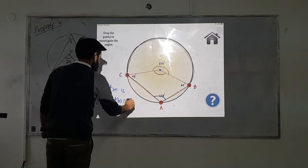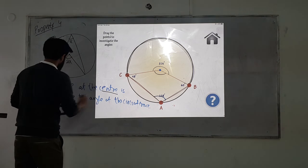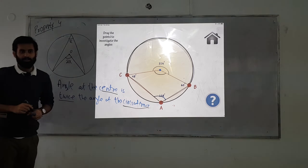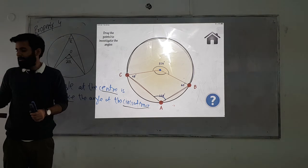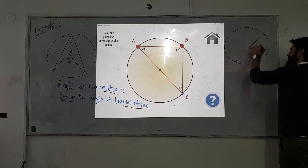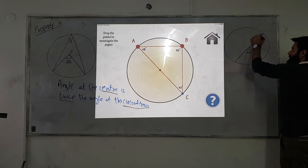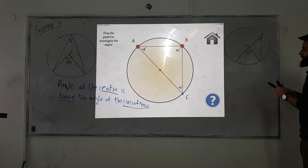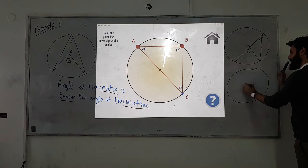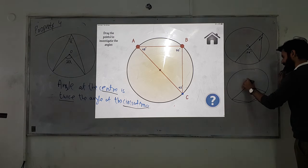If I asked you to underline the keywords here, what would you pick? Center, double, circumference — or center, twice, circumference. Since we're doing angle properties of circles, that's understood anyway. Any questions? So the other cases are: if this angle is x, the center angle will be 2x.